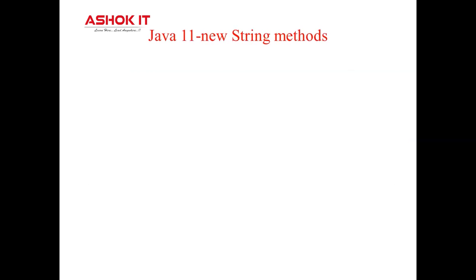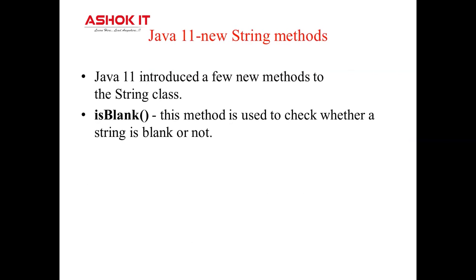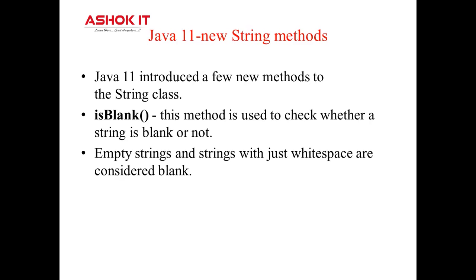The second feature: Java 11 added some new string methods. Strings are the most used data type in Java and almost every application makes use of strings. That's why strings are treated with special attention in Java, and from time to time new methods are added to the string class so that working with strings becomes effortless and simple. The first new method is isBlank, which checks if a string is empty or contains white space only.